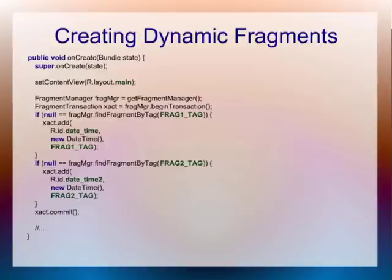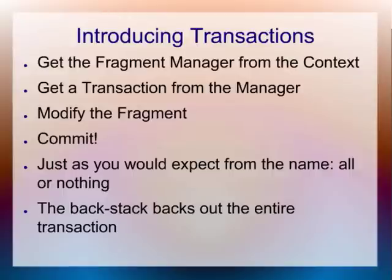Just to recap, here's how you use a dynamic fragment. First, you get the fragment manager from the context. You get a transaction from the fragment manager. You modify the fragment, then you commit it. Everything that happens in that commit happens all at once. And here's the big deal — the back stack backs out the entire transaction at once. So if you create 47 new fragments and then your user hits the back button, all 47 of them disappear at once. I don't really recommend creating 47 fragments, but that's the deal.